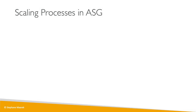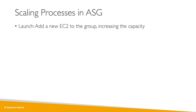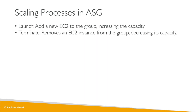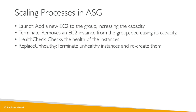In this lecture, I want to show you the inner workings of an Auto Scaling Group. Behind the scenes, ASGs have scaling processes. The first is called Launch, which launches new EC2 instances into the group, increasing capacity. We also have Terminate, which removes EC2 instances from the group, decreasing capacity. Health Check performs health checks on the instances.